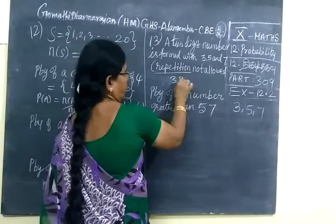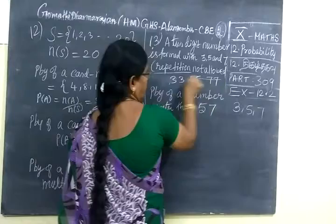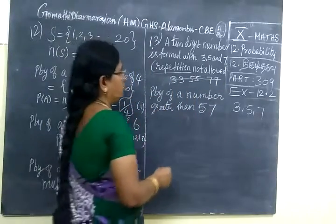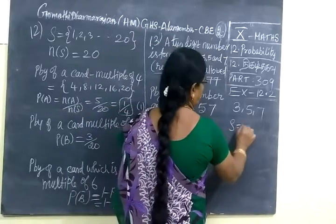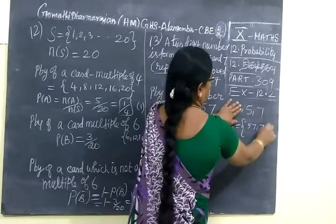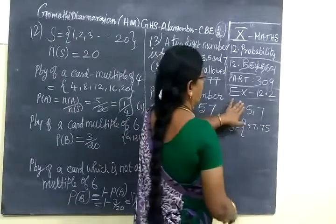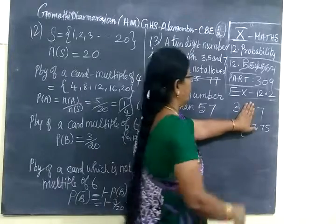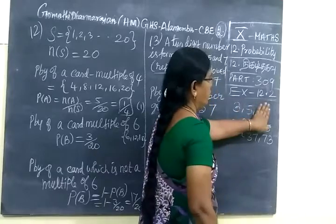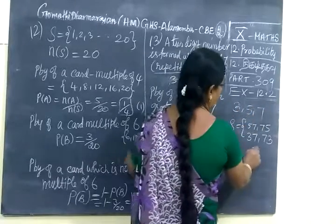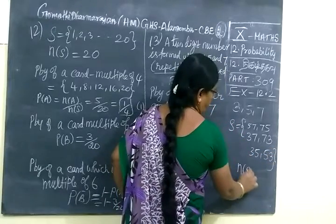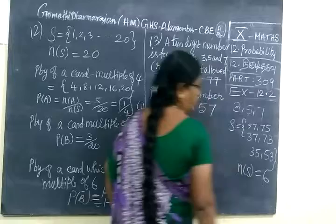So we form 35, 37, 53, 57, 73, 75. Total equals 6 possible two-digit numbers.